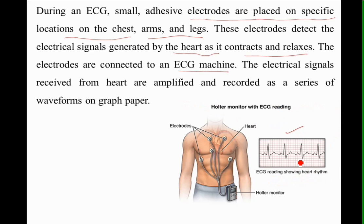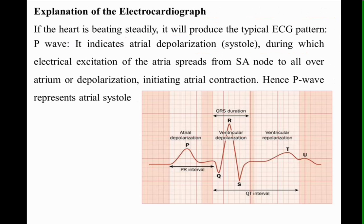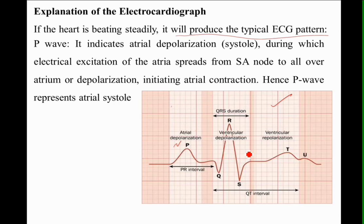This is the ECG reading — the rhythmic heartbeat reading can be observed as an ECG waveform on graph paper. In an electrocardiogram, if the heart beats steadily, it will produce a typical ECG pattern. Here we can observe this typical ECG pattern.